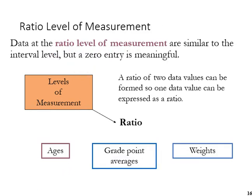And finally, ratio, as we said, has a meaningful zero. Ages, somebody cannot be negative in terms of their age. Grade point average, nobody can perform lower than zero on grades. And weights, now there's no such thing as a negative weight.